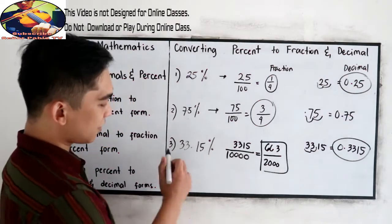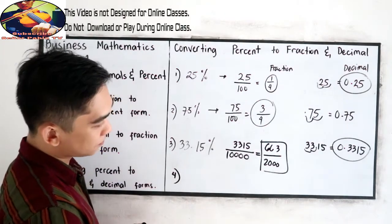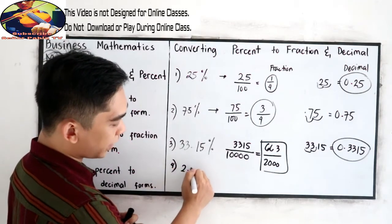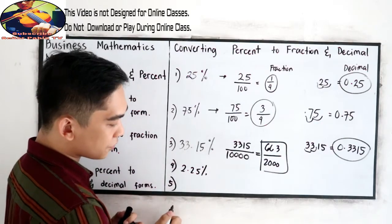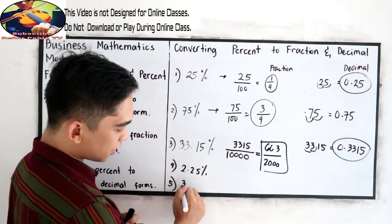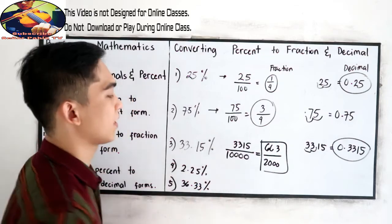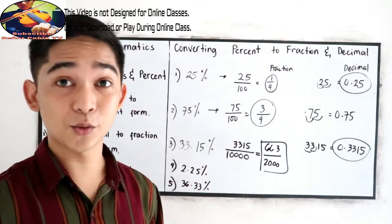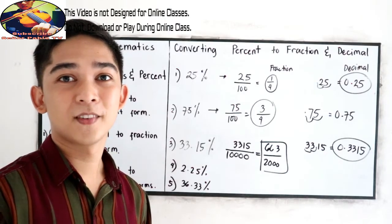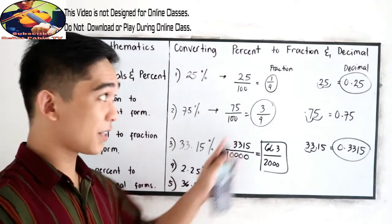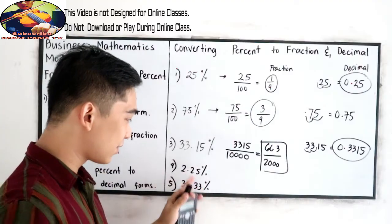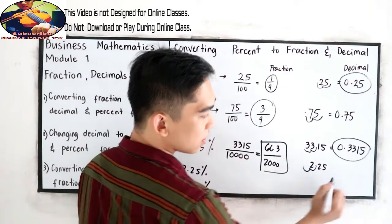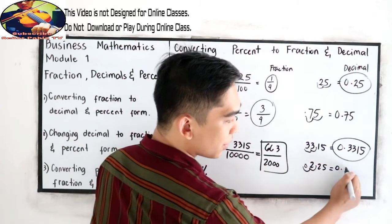Now try number 4. Let's say number 4 is 2.25%, and also try number 5: 36.33%. Write into fraction and decimal. You can pause the video if you want to try numbers 4 and 5, then resume watching to check your answers. Now let us first convert 2.25% into decimal — the easiest way. Just move our decimal twice to the left: 1, 2. So that is 0.0225.